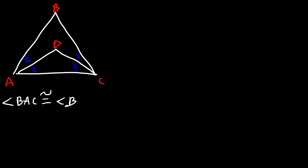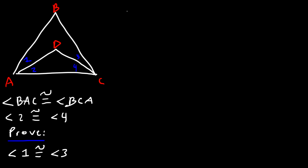Let's work on another problem. We have points A, B, C, and D, with angles one, two, three, and four. Given that angle BAC is congruent to angle BCA, and that angle two is congruent to angle four, prove that angle one is congruent to angle three. Notice that angle BAC is composed of angles one and two, and angle BCA is composed of angles three and four. Let's start with a two-column proof.